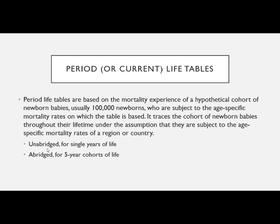There are different types of life tables. The unabridged is for single years of life, and the abridged is for five-year cohorts of life, or sometimes ten-year cohorts.